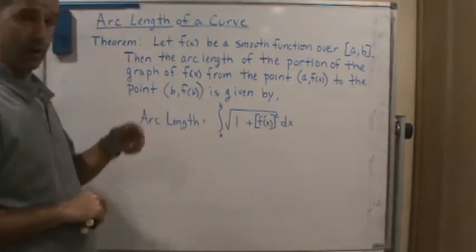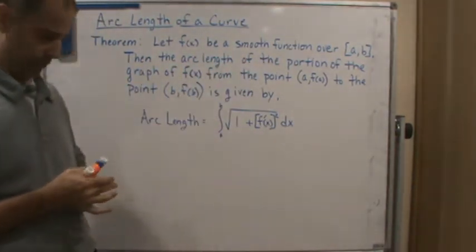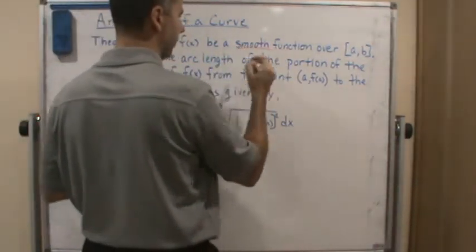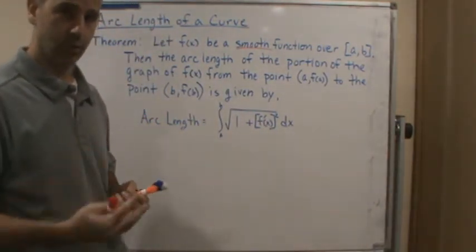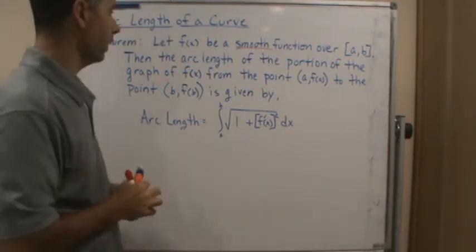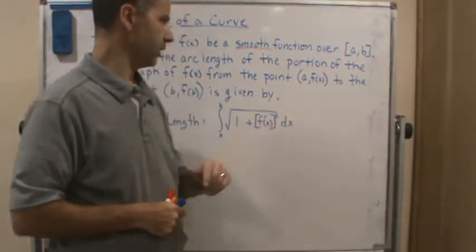So the theorem is about arc length. It says, let f be a smooth function. Remember, smooth function means a function that is differentiable and its derivative is continuous. So let f of x be a smooth function over this closed interval a to b.